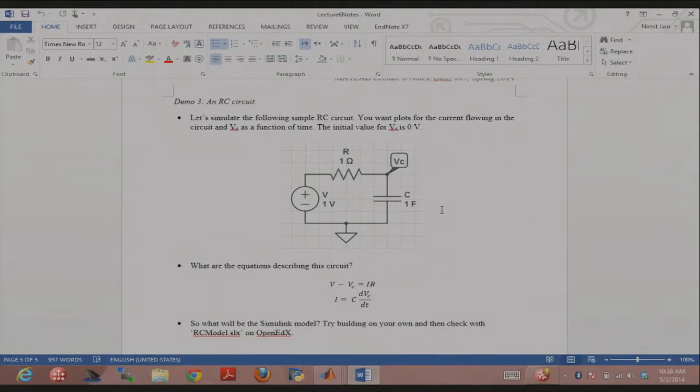Very simple RC circuit. There's current flowing in the circuit. You've probably all seen this in ENM or something. So there's just a voltage source, a resistor of one ohm, a capacitor, one farad. And there's some current flowing through the circuit and VC is the voltage of this node. I want to know through Simulink what are the plots for current and VC as a function of time, and the initial value for VC is zero. And I've also given you the equations describing the circuit, right?